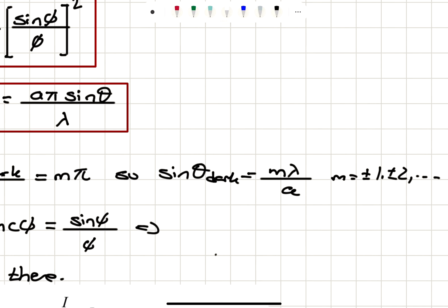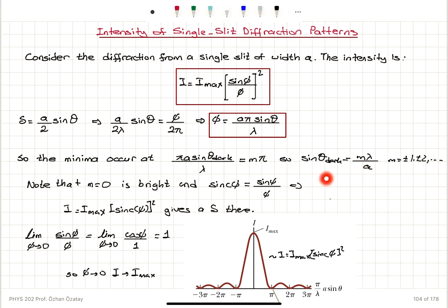Remember that m cannot be 0 here. If you have m = 0, that would correspond to the central bright fringe, not dark. So we have m = ±1, ±2, etc. This basically recovers our destructive interference condition for the diffraction pattern.